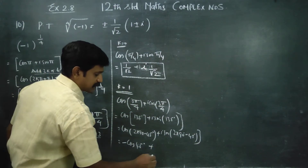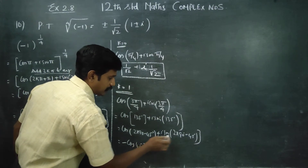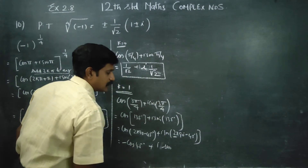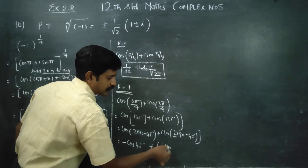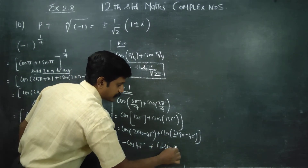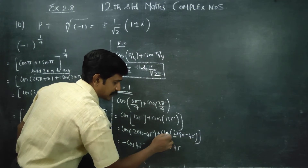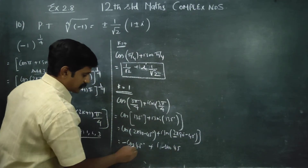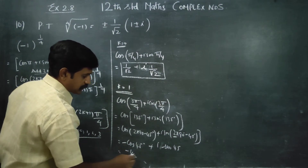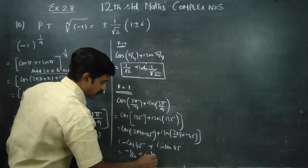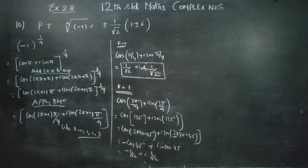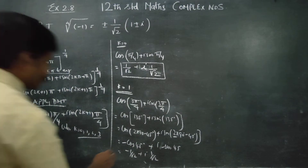In the second quadrant, cos is negative so we get minus cos 45°, and sin is positive so we get plus sin 45°. Therefore the second answer when k = 1 is: −1/√2 + i·(1/√2).